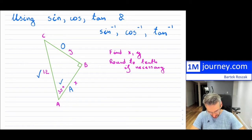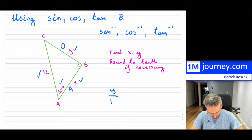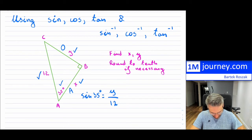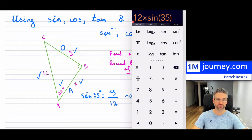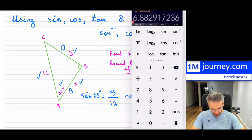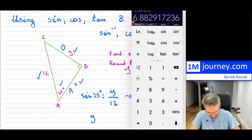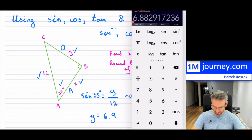If I want to find Y first — that is the opposite side — so opposite over hypotenuse is simply sine of the angle. Now I can isolate and solve for Y. So Y is simply 12 multiplied by sine of 35. Just make sure your calculator is set to degrees. Hit equals, and rounding to the tenth, Y is 6.9.